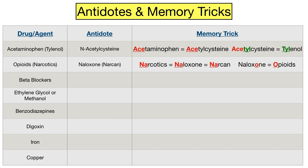The next drug class is beta blockers, which are a class of medications commonly used for hypertension, arrhythmias, heart failure, among other indications. Do you know how to manage beta blocker toxicity? One of the treatments is glucagon. The way I like to remember this is BB-GUN — the BB stands for beta blockers and the GUN will help you remember glucagon. Glucagon is what's commonly tested, but treatment of beta blocker toxicity may involve other medications and regimens as well.